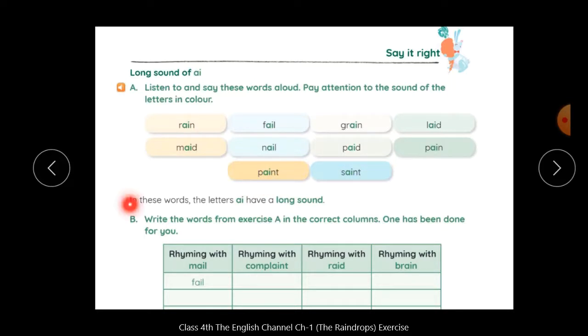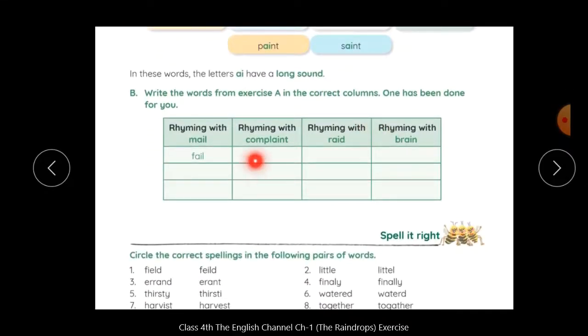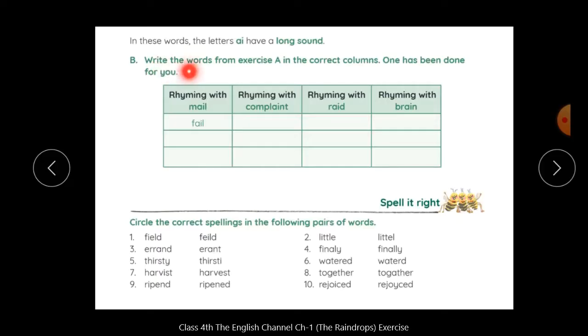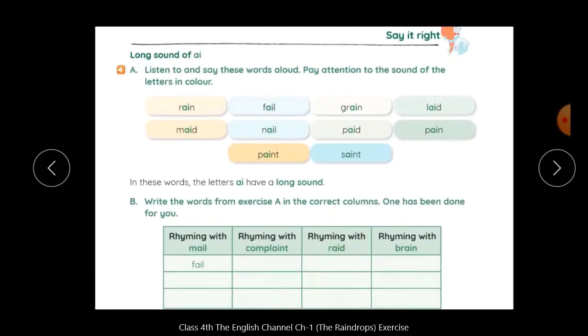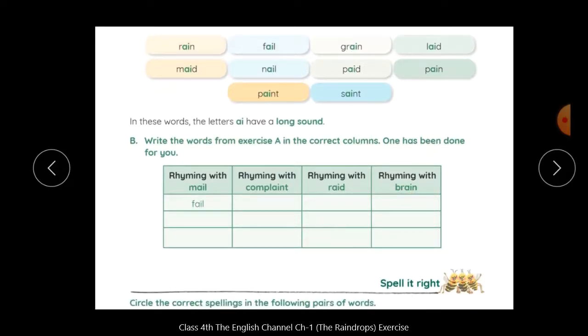In these words, the letters ai, ay have a long sound. Okay, now your exercise here. Write the words from exercise A in the correct columns. You have to choose the correct words to fill in these columns. One has been done for you.